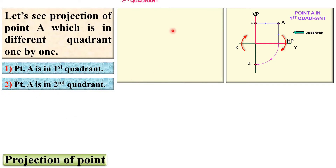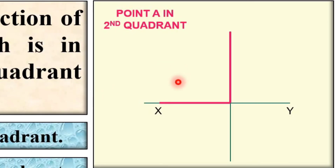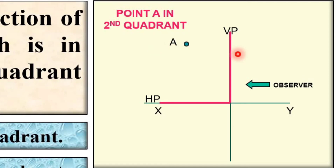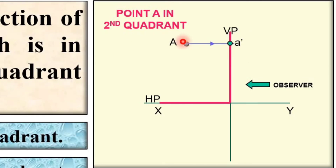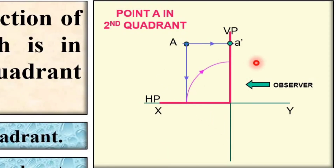If point A is in the second quadrant, it will be like this. This is the second quadrant and here point A is placed. If the observer is in this direction then the projection must be on the vertical plane and is denoted by a-dash. The top view is denoted by 'a', and the HP must be rotated in the clockwise direction so that it moves over here — so the 'a' point will be in this position.